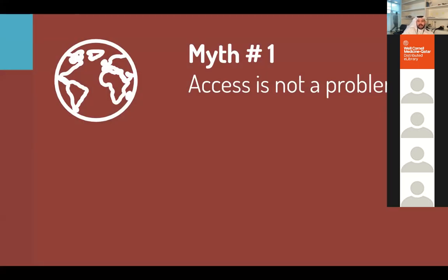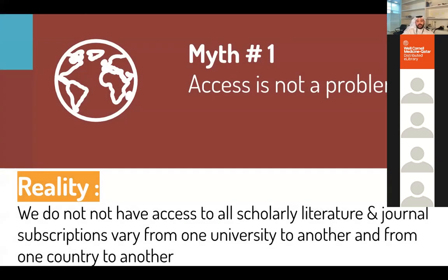The first myth is that access is not a problem — 'we have subscriptions, so why open access?' The reality is that we as a community do not have access to all scholarly literature. Journal subscriptions vary from one country to another and one institution to another. Some countries have zero access, others have more — the information is not distributed equally. There is no equity in information distribution, and open access is a solution.